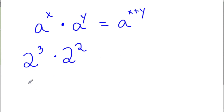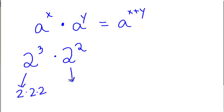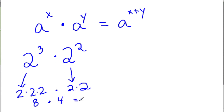You could figure out 2 to the third power — that's 2 times 2 times 2. And then 2 to the second power, which is 2 times 2. 2 times 2 times 2 is 8, and 2 times 2 is 4. We're multiplying these, and 8 times 4 is 32. That could be your answer.